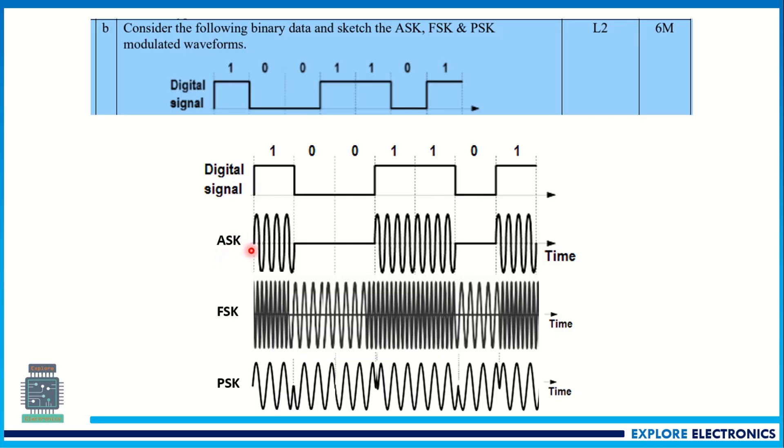Here I have given ASK output will be, the carrier will be same here. Whenever it is zero, there is a zero signal, and again a carrier wave will come over here when it is one. Similarly FSK, when one is there, the frequency is more, here it is less like that. Similarly PSK will change its phase.